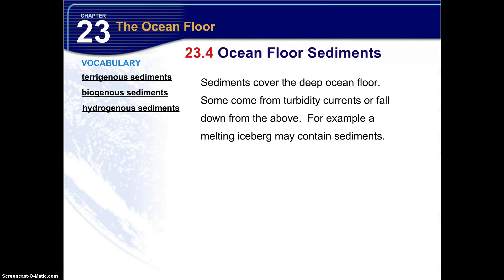Space-originating sediments result from space particles that are constantly bombarding Earth's surface. Most space particles are very small and burn completely in the atmosphere. Some larger ones melt materials on Earth's surface upon impact. These particles are the source of what are called splash-form tektites and microtektites, which can be found both on land and on the seafloor.